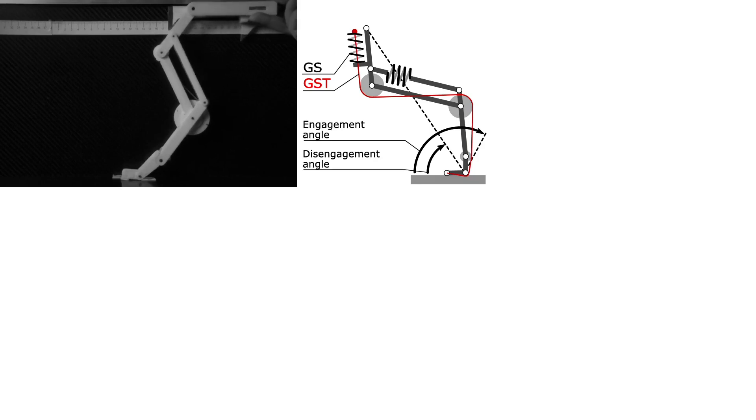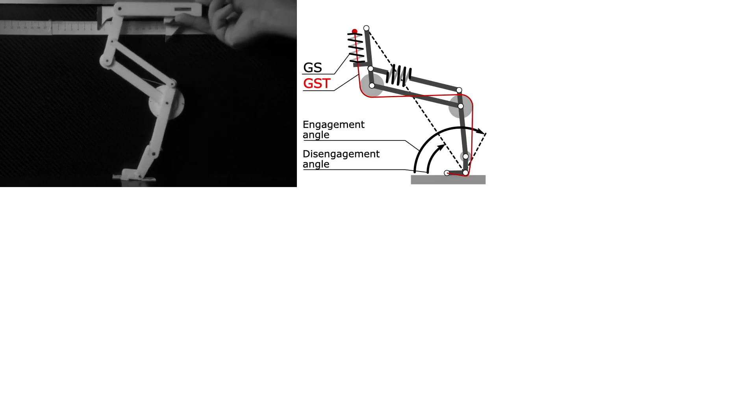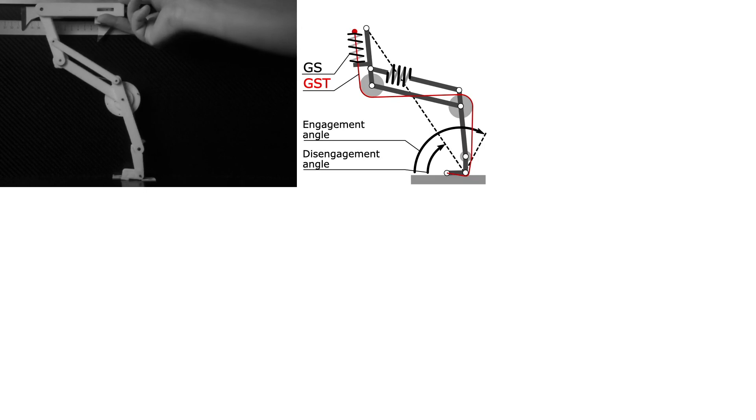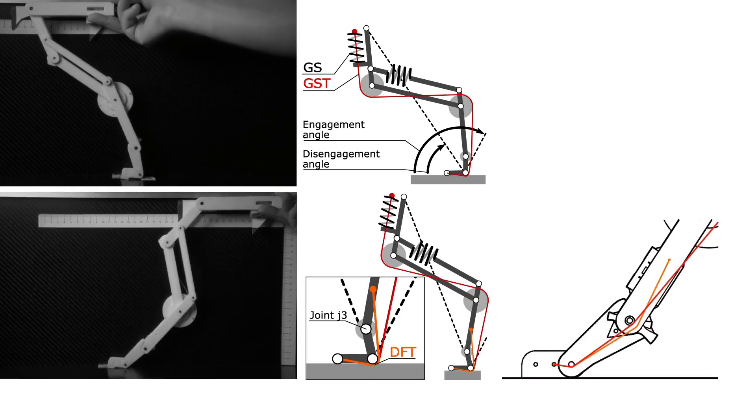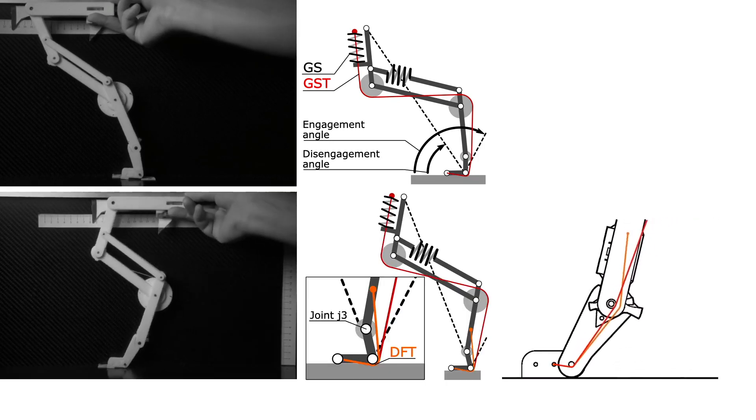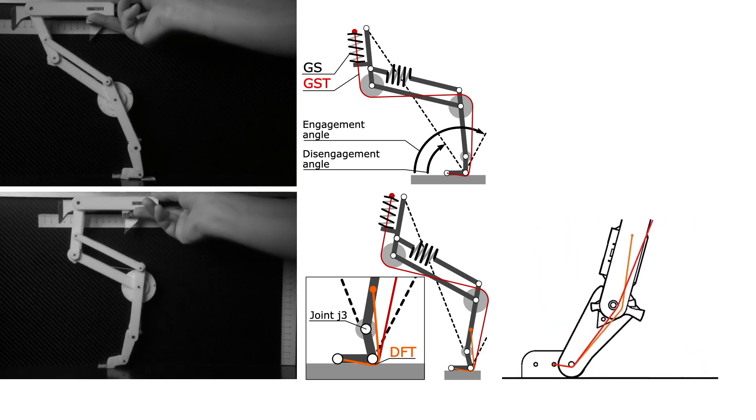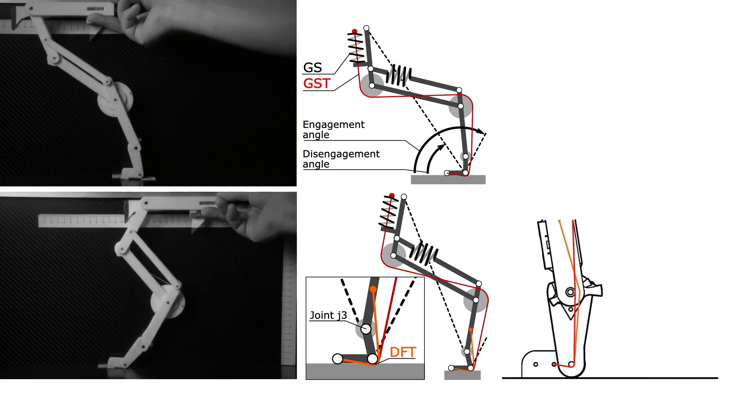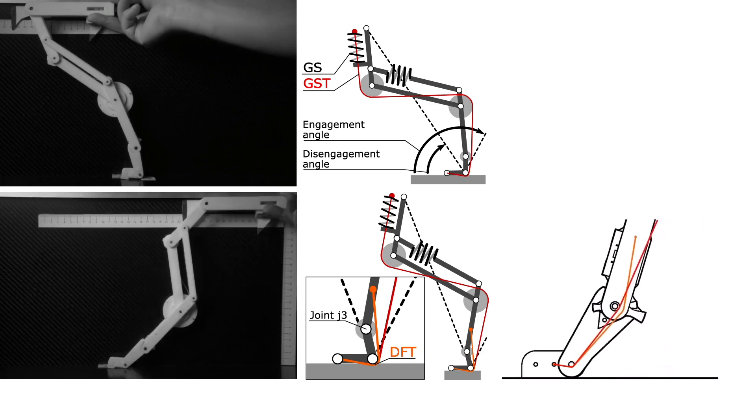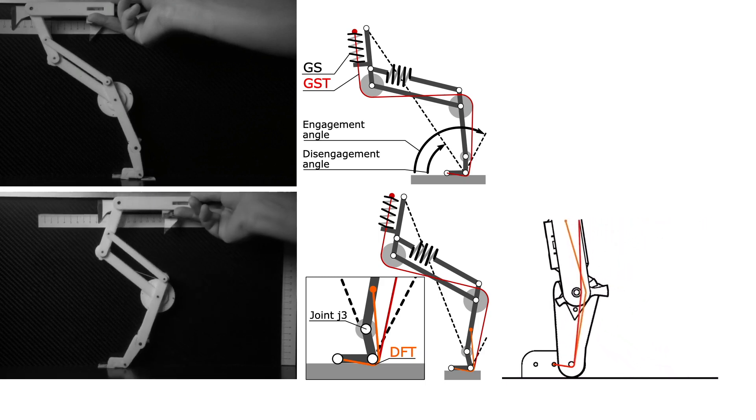In this configuration, the global spring will disengage when the leg is fully extended at end of stance. An additionally mounted disengagement flexor tendon is coupled to the movement of joint J4 in stance. This flexes joint J3, which disengages the global leg spring earlier in stance phase.